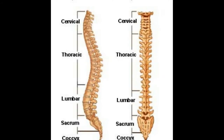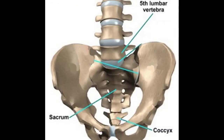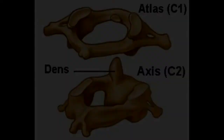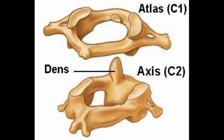The human spinal column is made up of five distinct sections divided by 33 bones. There are seven vertebrae in the cervical region, twelve in the thoracic region, five in the lumbar region, five in the sacral region, and four in the coccygeal region. At the top of the structure, where your head intersects and attaches to the column, are more highly specialized and unique vertebrae.